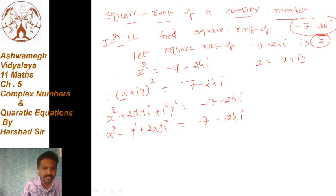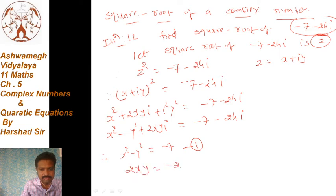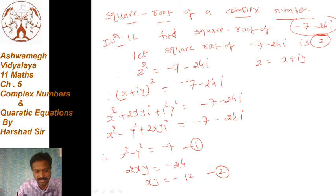दोनों sides से compare करना है। तो: x² - y² = -7 ... (equation 1), and 2xy = -24, यानी xy = -12 ... (equation 2).